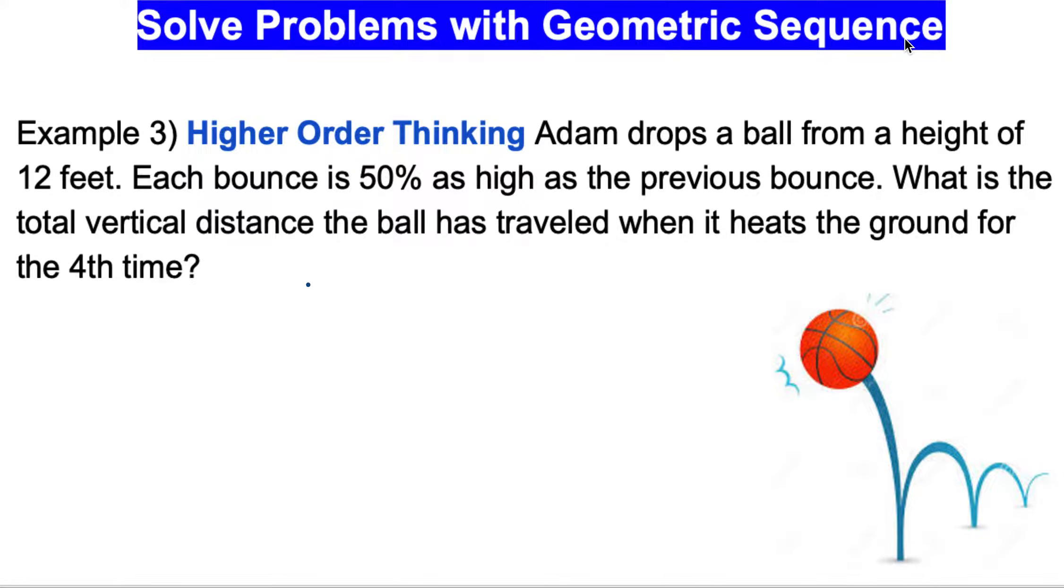Solve Problems with Geometric Sequences. Example 3: Higher Order Thinking. Adam drops a ball from a height of 12 feet. Each bounce is 50% as high as the previous bounce. What is the total vertical distance the ball has traveled when it hits the ground for the fourth time?